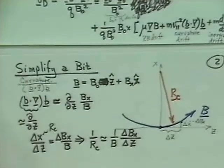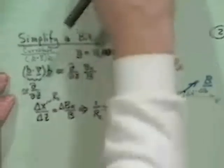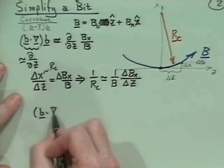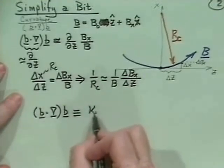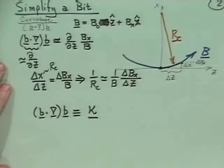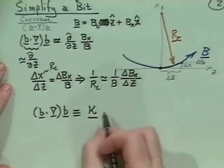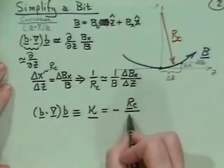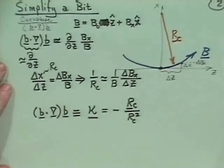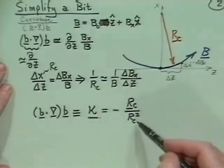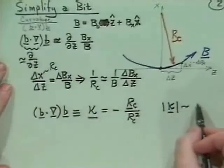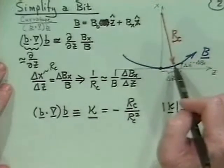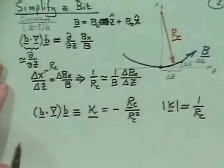The moral of this is that we can write the quantity b-hat · ∇b-hat — often defined as the curvature vector kappa — and it turns out it's equal to minus the radius of curvature vector divided by the magnitude of the radius of curvature squared. So in magnitude, kappa is one over the radius of curvature, but in direction it's minus the direction from the center to the field line.